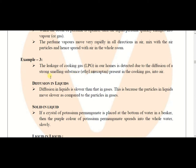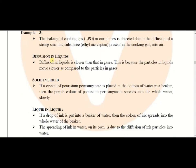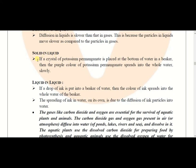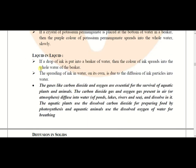Diffusion in liquids takes place slower than in gases, because the movement of liquid molecules is comparatively slower than gas molecules. For example, in solid-in-liquid diffusion, when potassium permanganate dissolves in water it completely dissolves and the color becomes purple. In liquid-in-liquid diffusion, if a drop of ink is put in a beaker of water, the color of the ink spreads into the whole water of the beaker.